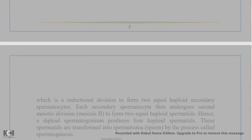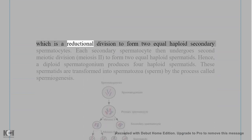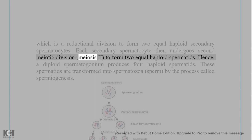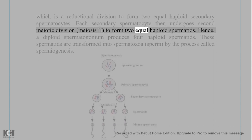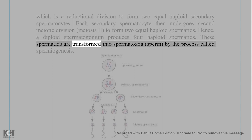This diploid primary spermatocyte undergoes first meiotic division (meiosis I), which is a reductional division, to form two equal haploid secondary spermatocytes. Each secondary spermatocyte then undergoes second meiotic division (meiosis II) to form two equal haploid spermatids. Hence, a diploid spermatogonium produces four haploid spermatids. These spermatids are transformed into spermatozoa (sperm) by the process called spermiogenesis.